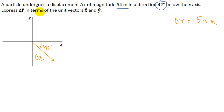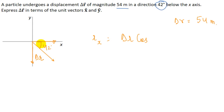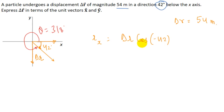Now, we have to express Delta R in terms of unit vectors. This displacement vector will have a component in the x-direction and in the negative y-direction. The x-component Rx = Delta R × cosine of the angle. Since we are measuring this angle in the clockwise direction, we take it as minus 42 degrees, or equivalently 318 degrees — both give the same answer. Solving this, we get Rx = 40 meters.